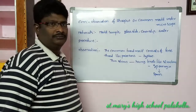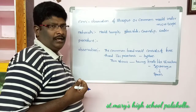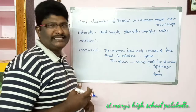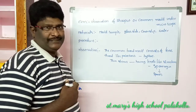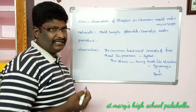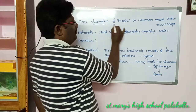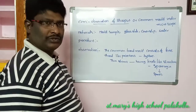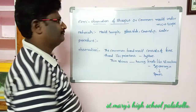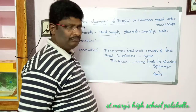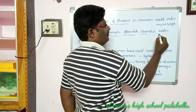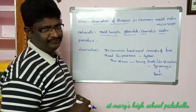Now we have a common mold sample, and with that sample we are doing this lab activity. The aim is: observation of Rhizopus or common mold under the microscope. The materials needed are: mold sample, glass slide, cover slip, water, and glasses.